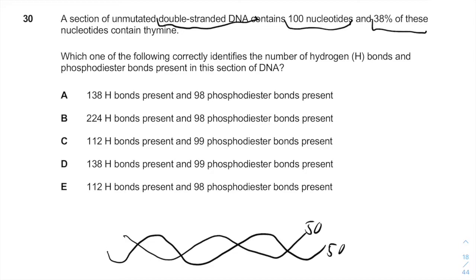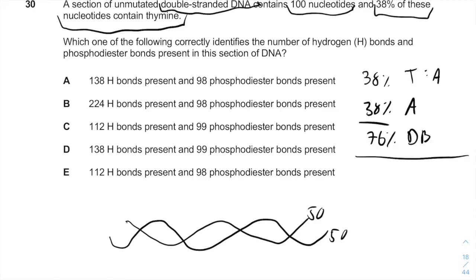What can we do with this statement? So, if 38% are thymine, and thymine creates double bonds with adenine, we will also have 38% of adenine. In total, we will have 76% of double bonds. And it means the rest, 24%, will be divided between triple bonds in guanine and cytosine.